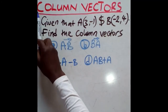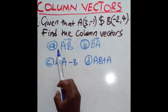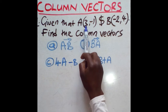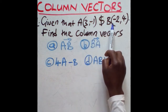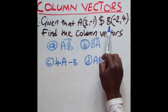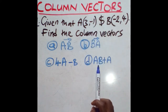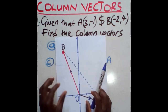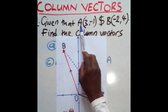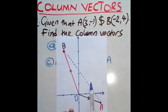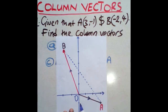On the solving board today we are dealing with column vectors. We are given two coordinates: coordinate A and coordinate B. If we consider plotting them on the x-y plane, coordinate A is at (3, -1), meaning three steps on the x-axis and negative one step on the y-axis. This is the position for coordinate A.